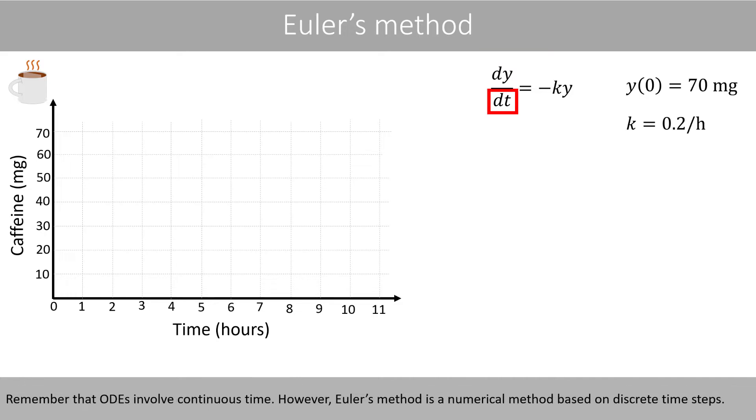Remember that ordinary differential equations involve continuous time. However, Euler's method is a numerical method based on discrete time steps. We therefore change the notation dy/dt to Δy/Δt, which indicates that the time is now discrete and not continuous.